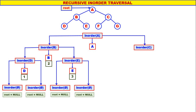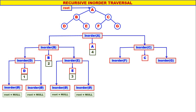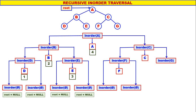Next A will be displayed — that is the fourth one to be displayed. Now let us come to inorder of C. C is not equal to null. Left child of C is F, therefore inorder of F. C is displayed. Right child of C is G, therefore inorder of G. For inorder of F: left child of F is null, therefore inorder of null. F is displayed. Right child of F is null, therefore inorder of null — root is equal to null, nothing happens. F is the fifth one to be displayed.